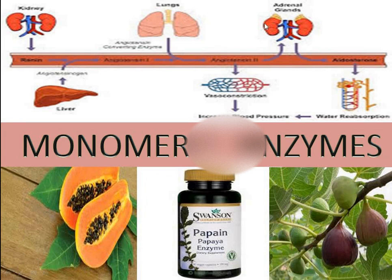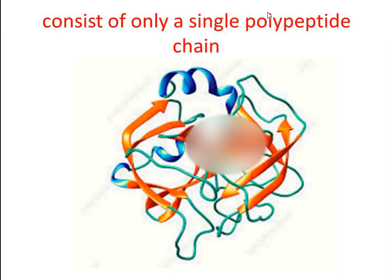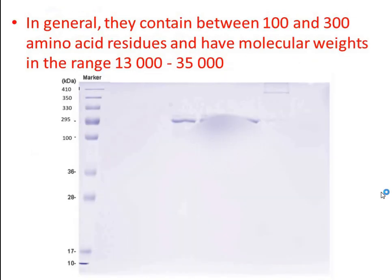Welcome. In this video we discuss monomeric enzymes. As you know, enzymes are made up of proteins. These proteins may be of a single polypeptide chain or of multiple polypeptide chains. Proteins which contain a single polypeptide are called monomeric proteins, and those enzymes which have a single polypeptide chain are called monomeric enzymes. They cannot be further dissociated into smaller units. Very few such enzymes are known, and all of them catalyze hydrolytic reactions.